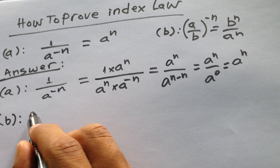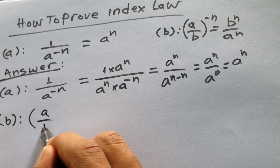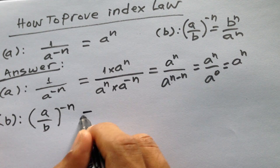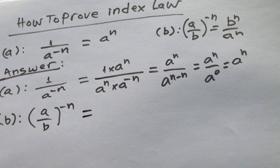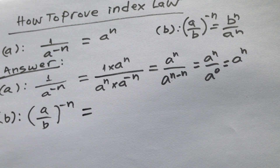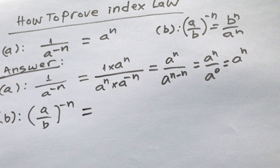Now for part b: b divided by a to the power minus n. I can rewrite this as b to the power n divided by a to the power n.